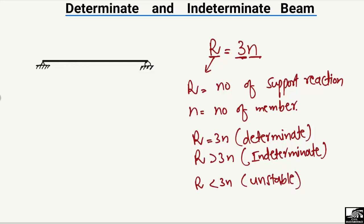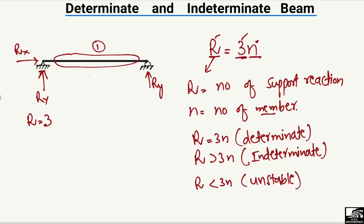Now let's define these three conditions. For this simply supported beam, the hinge support can take vertical and horizontal loads — giving Rx and Ry — and the roller support can only take vertical load, giving Ry. So the number of support reactions r is equal to 3. The number of members n is equal to 1, as there is only one beam supported by two supports.